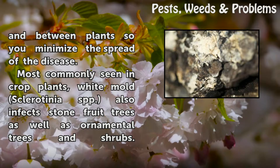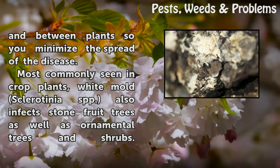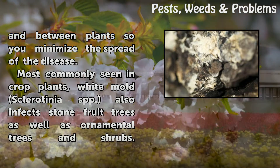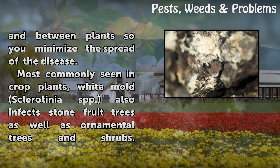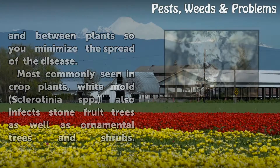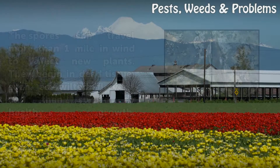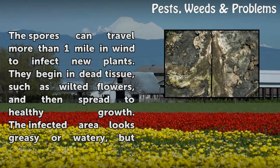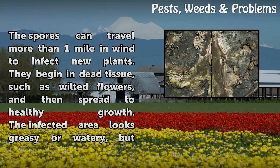Spray the pruning tools with household disinfectant between cuts and between plants so you minimize the spread of the disease. Most commonly seen in crop plants, white mold Sclerotinia spp. also infects stone fruit trees as well as ornamental trees and shrubs. The spores can travel more than one mile in wind to infect new plants.